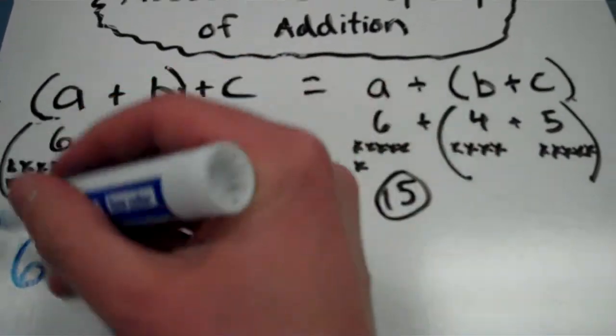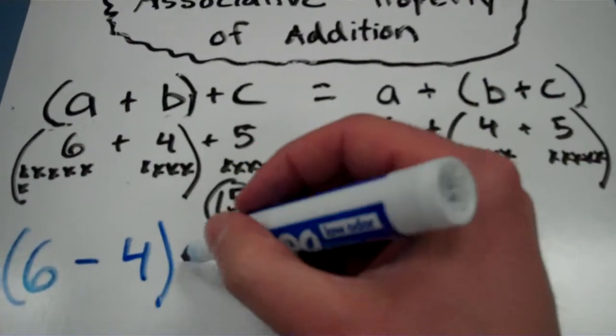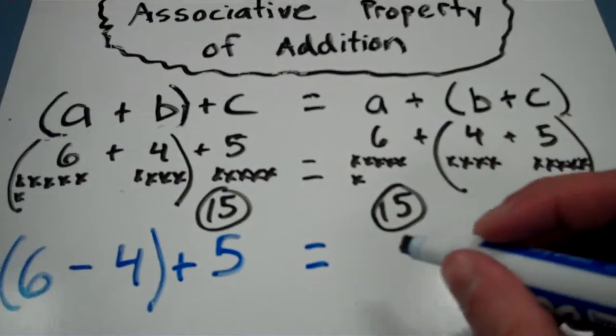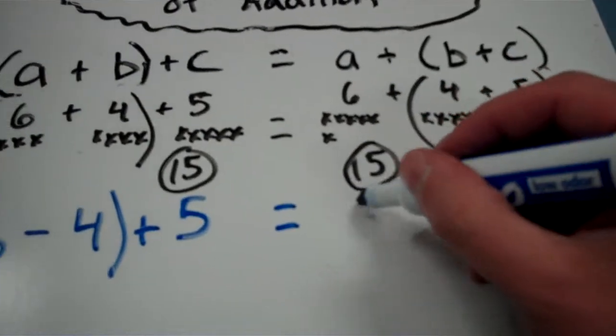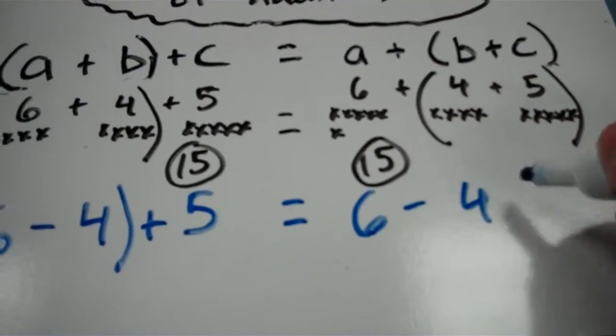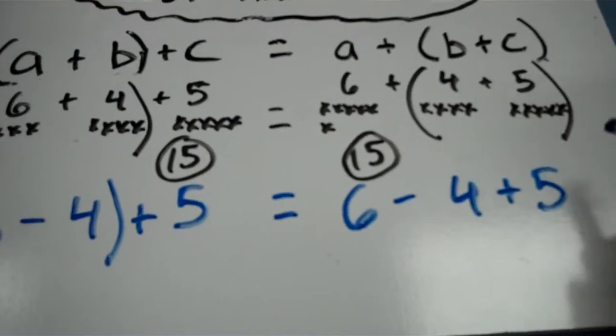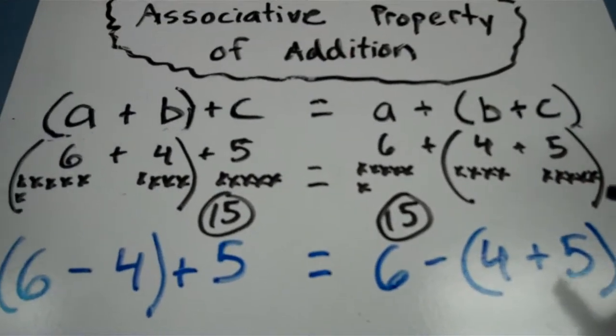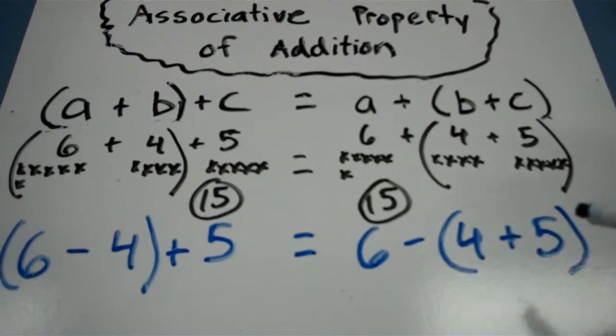6 minus 4, and I'll group those together, plus 5. And if you were to say that that's the same thing as 6 minus 4 plus 5, grouping the 4 and 5 together there, we'll see if that's really true.